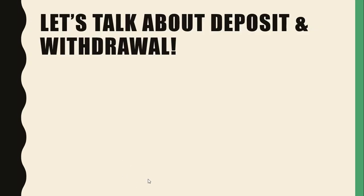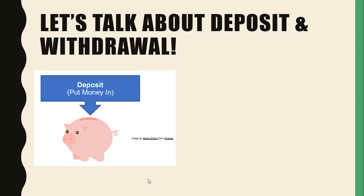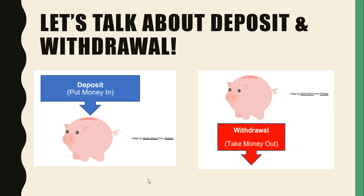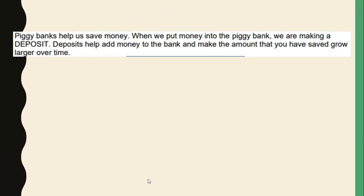Let's talk about deposit and withdrawal. Deposit is when you put money into the bank and withdrawal is when you take money out of the bank. Piggy banks help us save money. When we put money into the piggy bank, we are making a deposit. Deposits help add money to the bank and make the amount that you have saved grow larger over time. And when you grow up and become an adult, you can actually make deposits into a real bank.